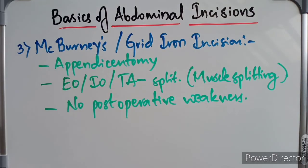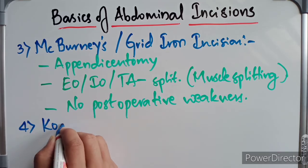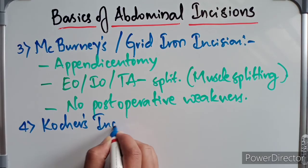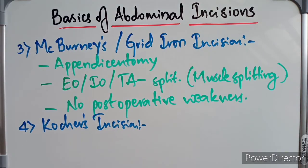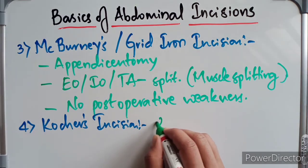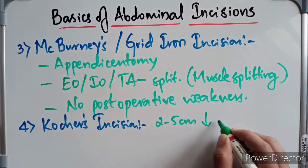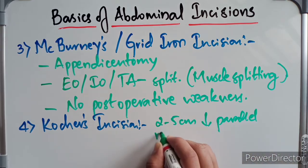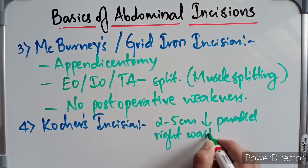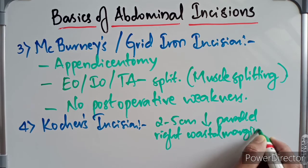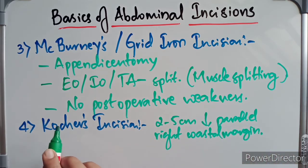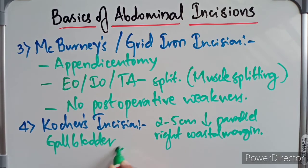Coming to Kocher's incision. This incision is given along the right subcostal margin — it is also called the right subcostal incision. It is given about 2 to 5 cm below and parallel to the right costal margin. This incision is used to explore the gallbladder and the associated ducts.